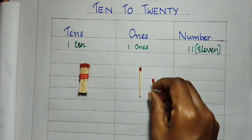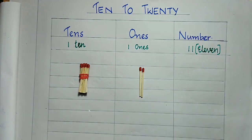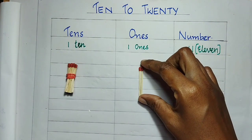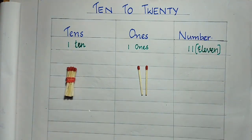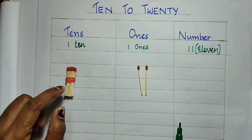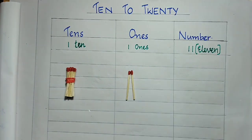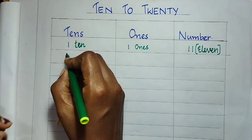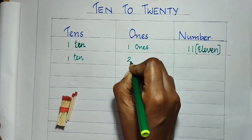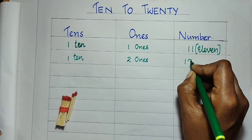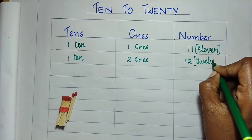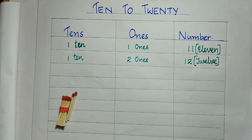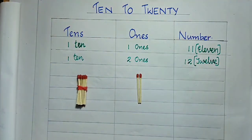Then, I am going to take one more math stick and keeping it in the 1s place. So, this is a bundle of 10 math sticks and this is 2 math sticks. 1 ten and 2 ones is 12. This is 10, then 11, 12. So, 10 plus 2 is 12. Let us write 1 ten and 2 ones equal to 12. How to write this in words? T-W-E-L-V-E. 12.